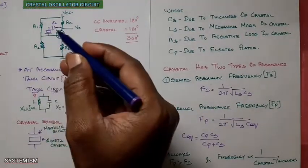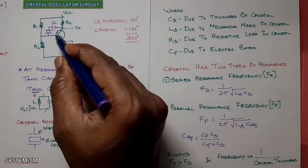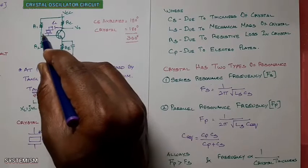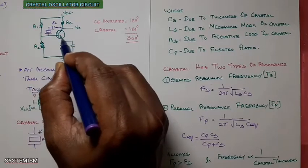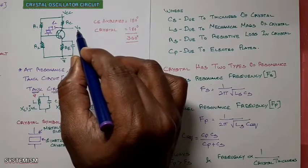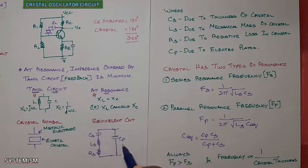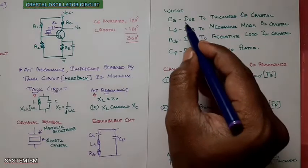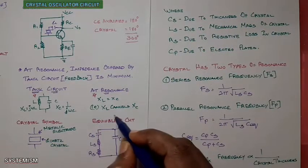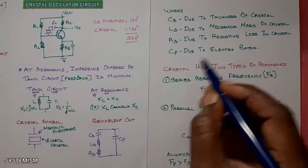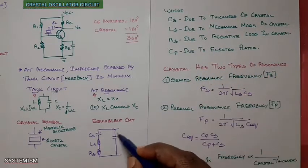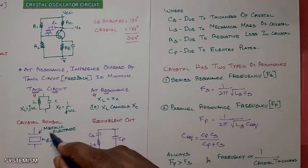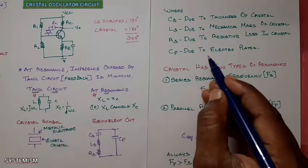This crystal will also act as a tank circuit. Only for a particular frequency, the impedance will be very less. Due to that, more amount of feedback will be fed to the amplifier, and only at that particular frequency will it create the oscillation. In this equivalent circuit: Cs is due to the thickness of the crystal, Ls is due to the mechanical mass of the crystal, Rs (series resistance) is due to resistive loss in the crystal, and the parallel capacitance Cp is due to the metallic electrode plates.